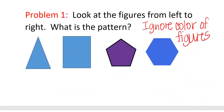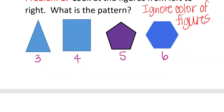Problem number one: look at the figures from left to right — what is the pattern? I couldn't find any colors or shapes that look the same, so it's not color. It's the number of sides. This figure has three sides, the next has four sides, the next has five sides, and the next has six sides. Basically the pattern is adding a side to each one.